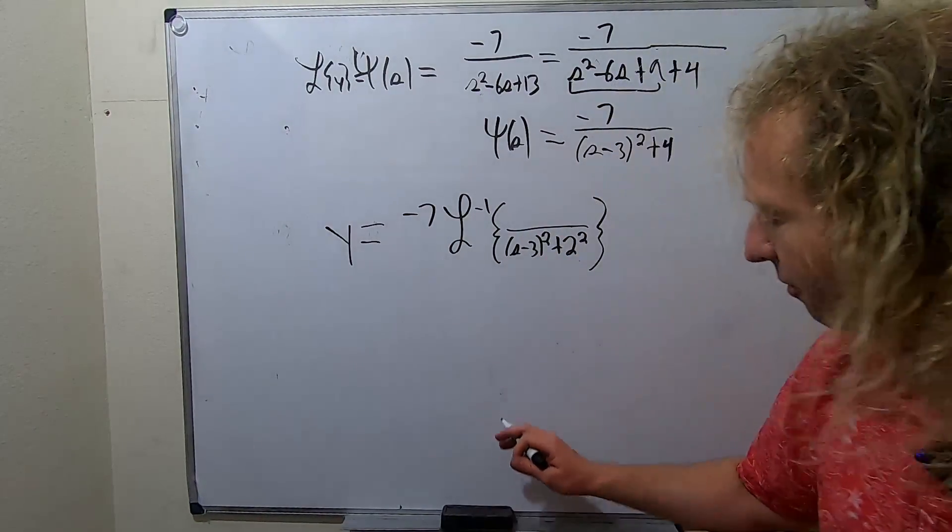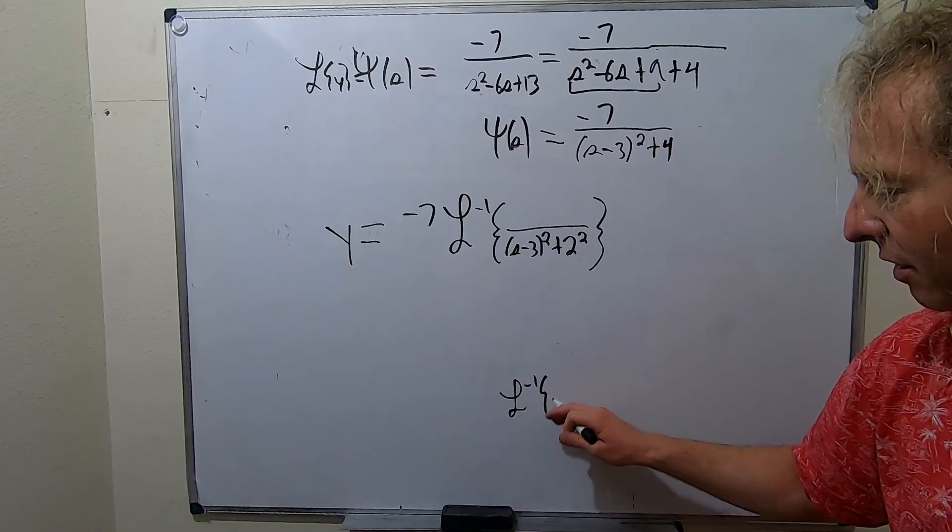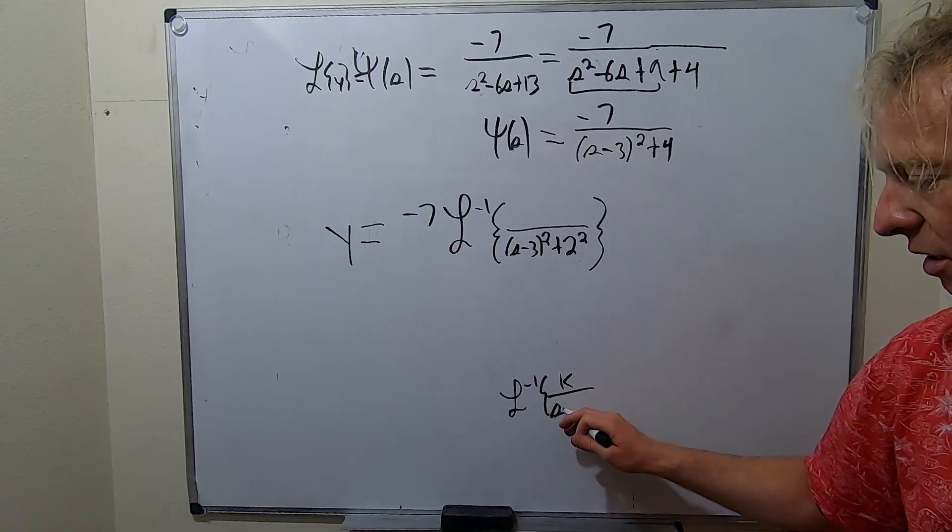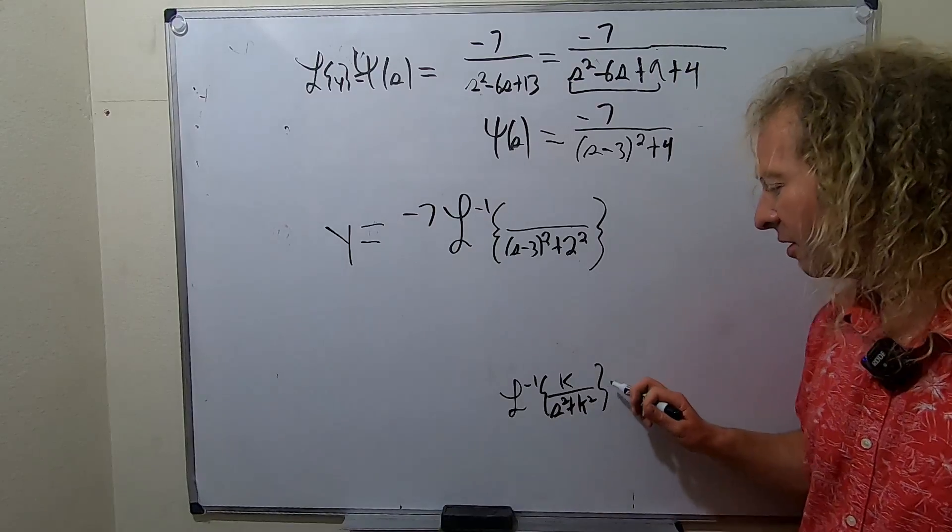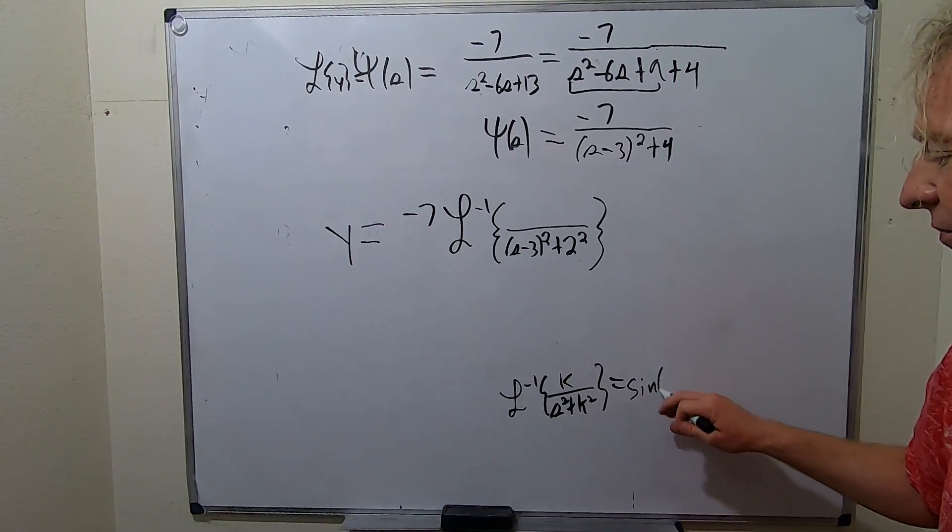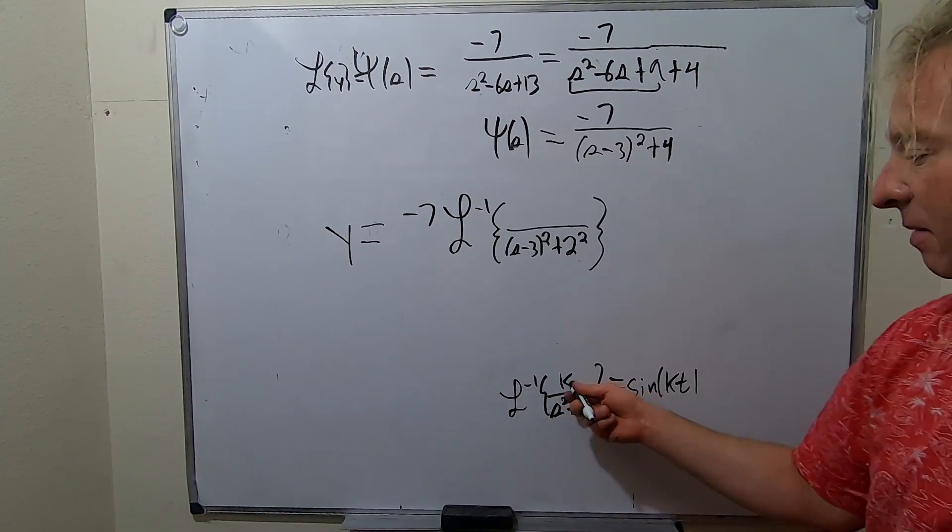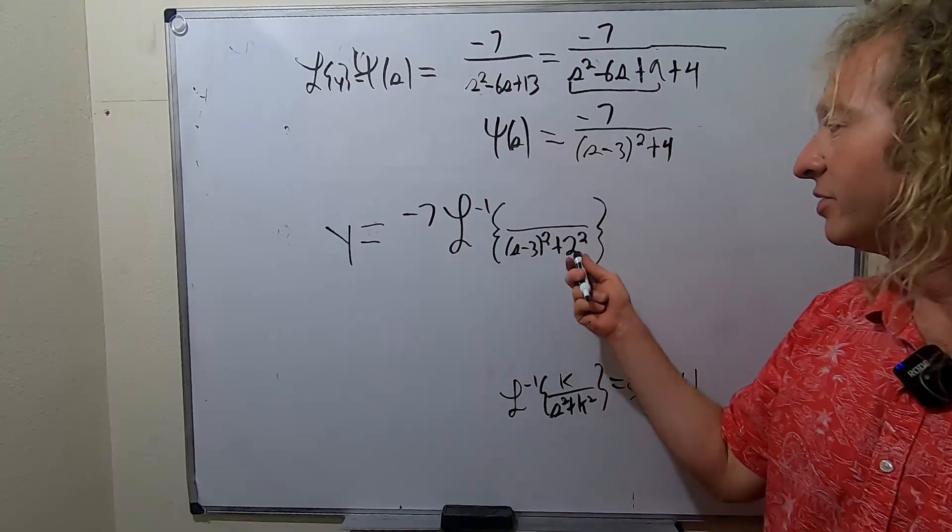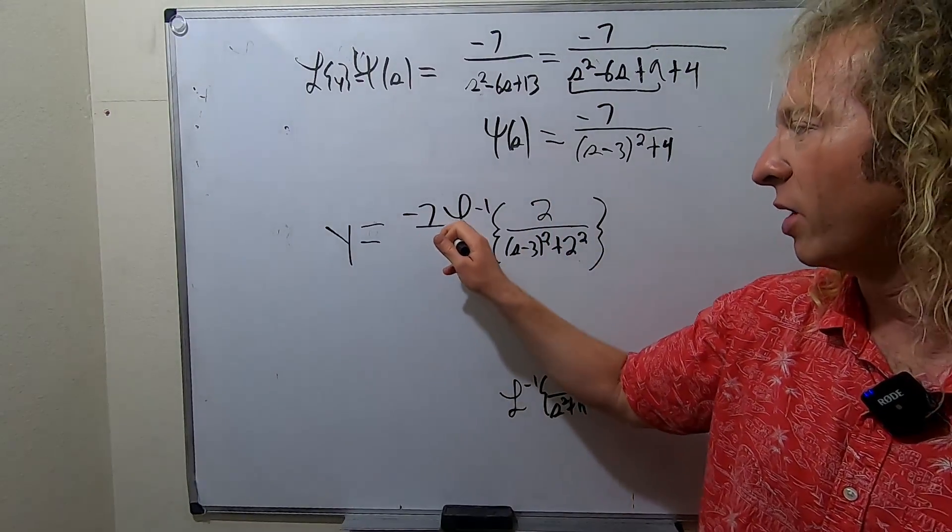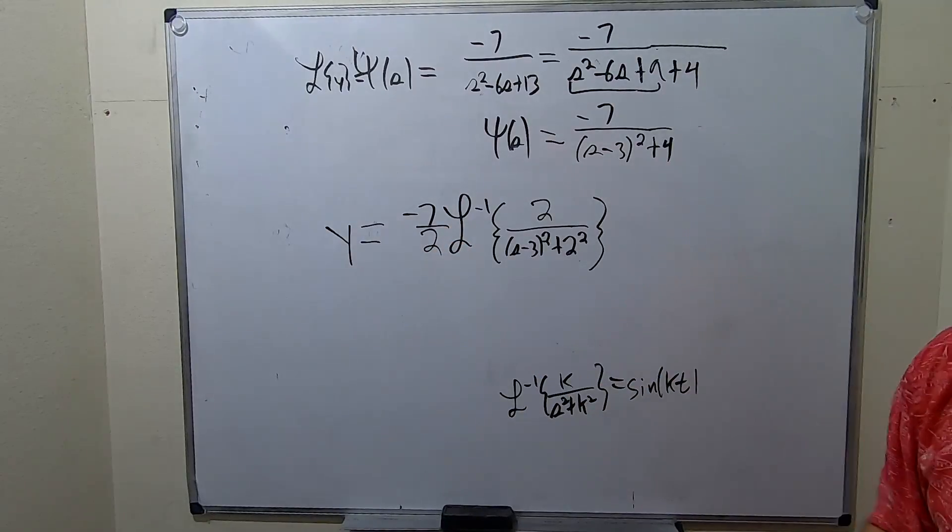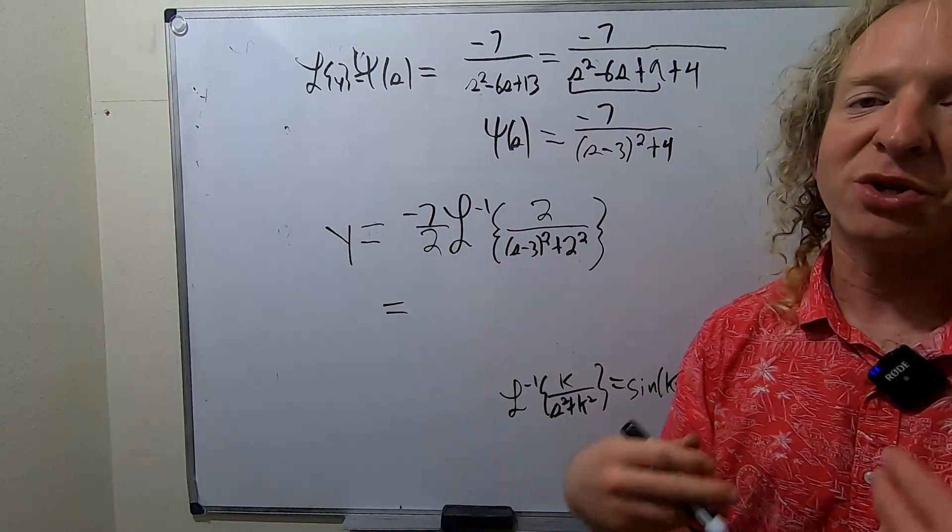This is going to be a sine. Remember, the formula for sine is this. So whenever there's a number up top and on the bottom it's squared, you're going to get sine kt. So here, the k has to be here, right? So k is 2, so you have to put a 2 here, okay, to make it match. So you can use this formula. And then you have to take away the 2. But it still doesn't match. So what do you do next?